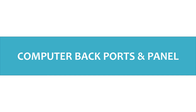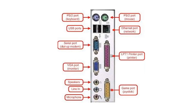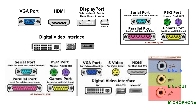Now let's take a look at the computer back ports and panel. The back panel of a computer has different ports: PS/2 port for the keyboard, USB ports, serial port for dial-up modem, VGA port for monitor, ports for speaker, line in and microphone, PS/2 port for mouse, Ethernet port for network, LPT1 printer port for printer, and game port for joystick. Here's a closer look at the different ports.